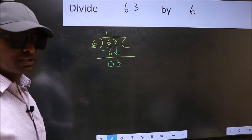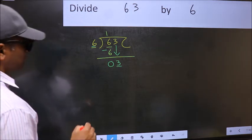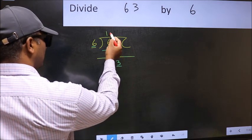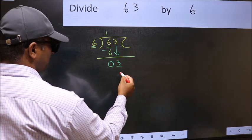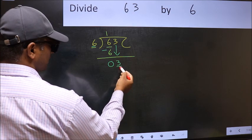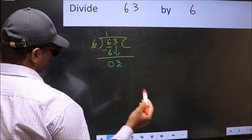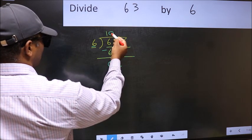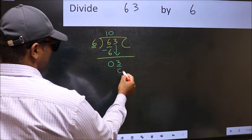Instead, what you should think of doing is, what number should we write here? If I take 1, we will get 6. But 6 is larger than 3. So what we should do is, we should take 0. So 6 into 0, 0.